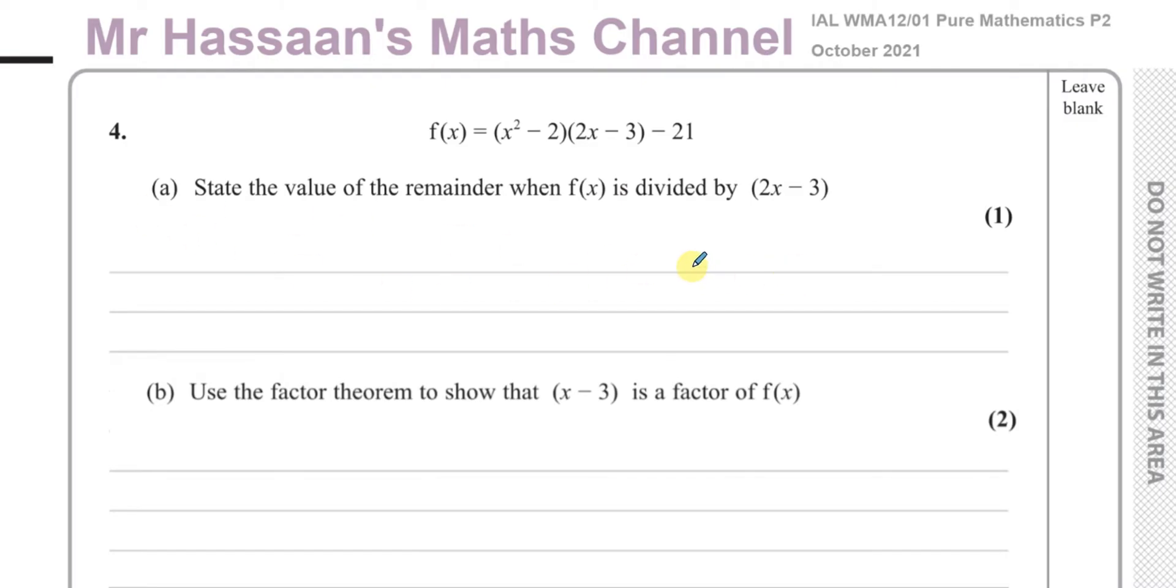It says state the value of the remainder when f(x) is divided by 2x minus 3. This question is very important that you read it and consider it carefully, because many students would be tempted to expand the brackets and simplify, and then maybe even use long division and then find the remainder. Yet the question is only worth one mark, and it mentions a word that's very important for us. When we read questions, you should take note. It says state. It says state or write down. It means there's no calculation involved, as the number of marks suggest.